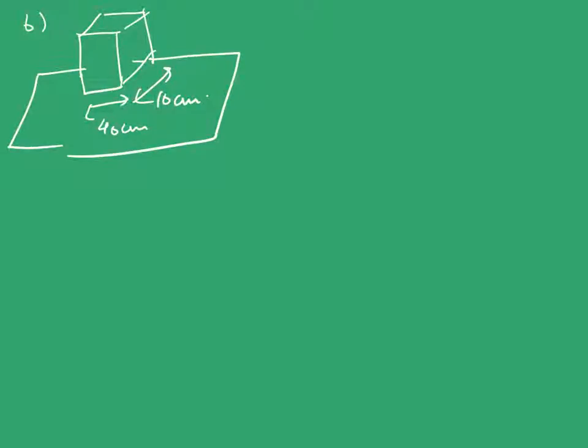In the second part, the dimensions of the block are such that this is 40 cm and this is 10 cm. It doesn't look like one but assume it to be 40 and 10 cm kept on the table. The force here again will be 5 × 10 = 50 newtons.